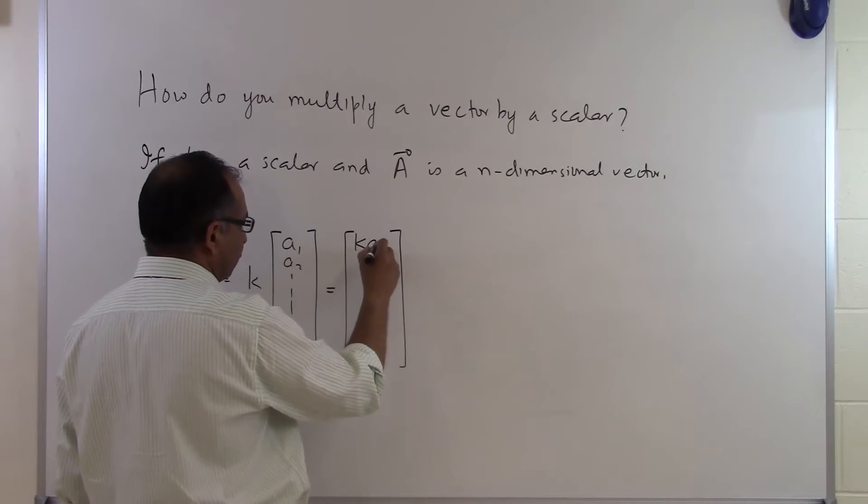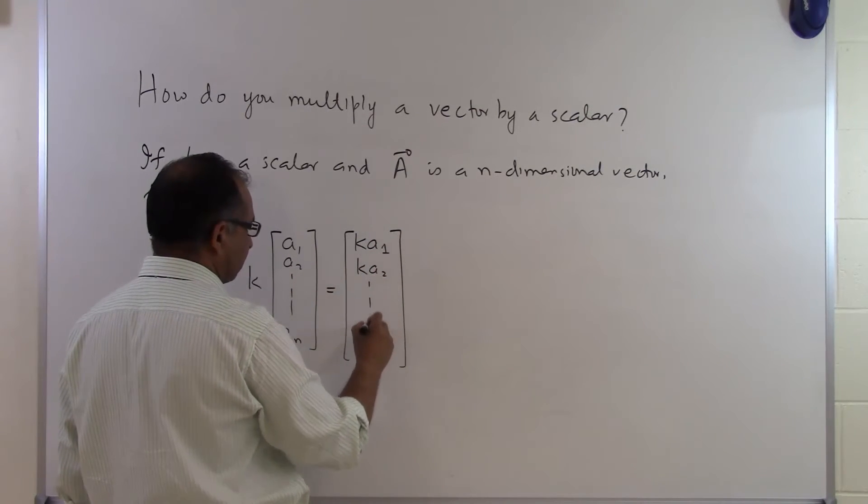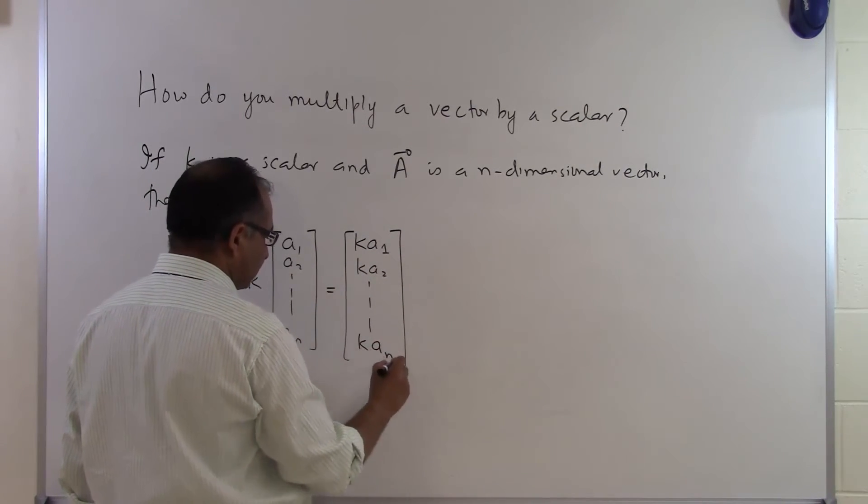The first component becomes k·a₁, the next one becomes k·a₂, and the last one becomes k·a_n.